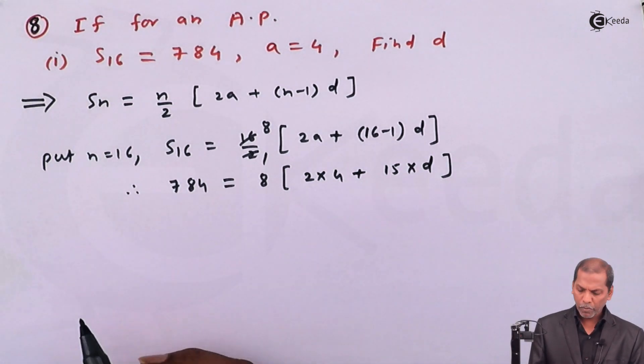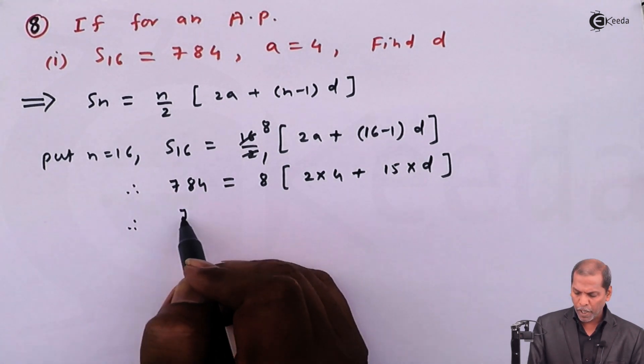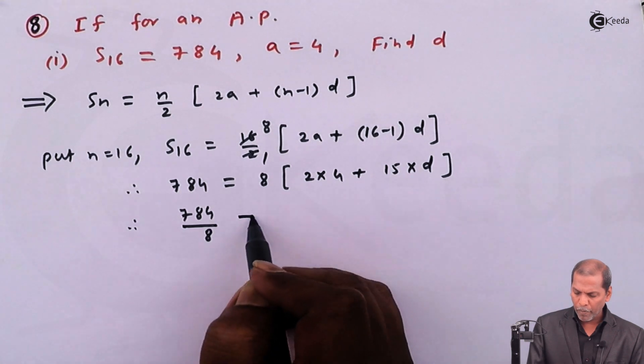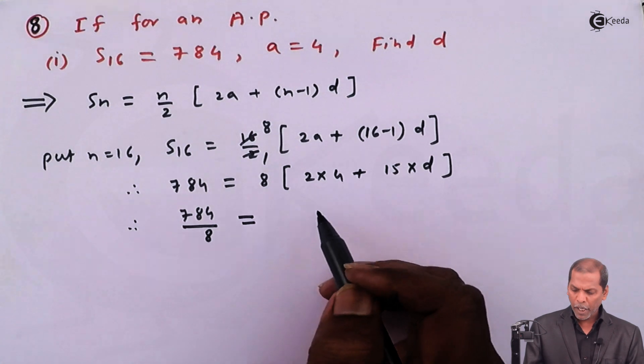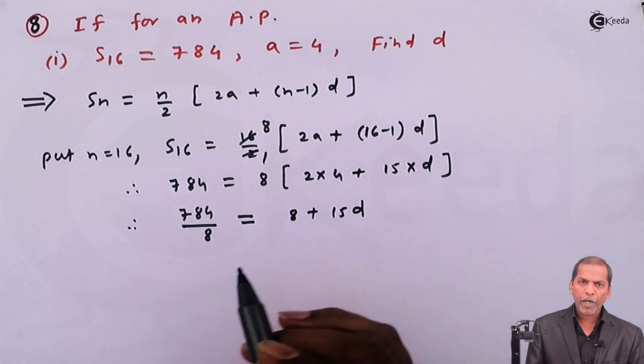The next step: 784 divided by 8 is equal to, now on right-hand side, 2 fours are 8 plus 15d.